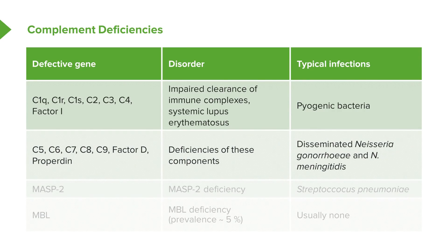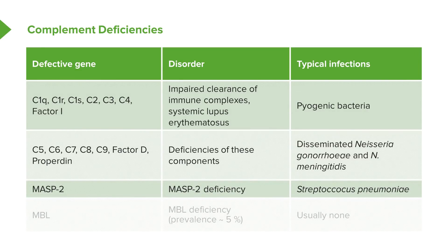Deficiencies in the later complement components — C5, C6, C7, C8, C9, factor D, and properdin — will lead to a range of other types of infections, particularly disseminated Neisseria infections. In MASP2 deficiency, one sees an increased incidence of Streptococcus pneumoniae.